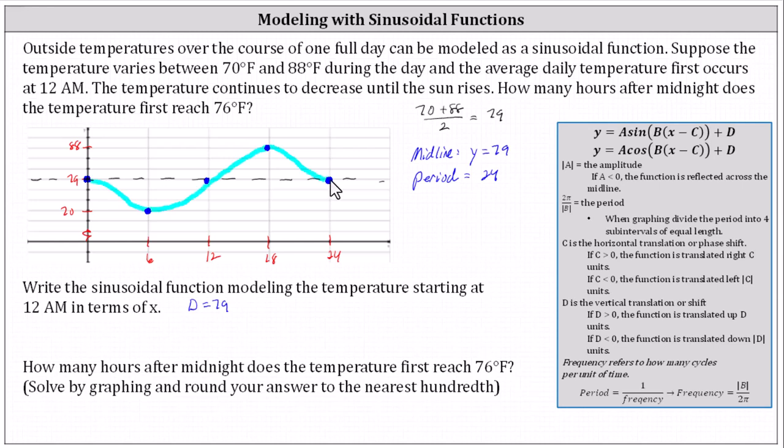And now we're going to determine the equation. We know d equals 79 because the midline is y equals 79 and the graph has been shifted up 79 units. Let's determine b because we know the period is 24 hours and the period is equal to 2π divided by b. Which means 2π divided by b equals 24.